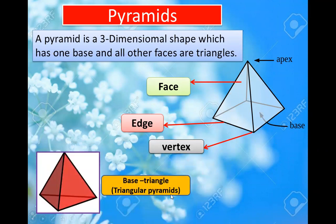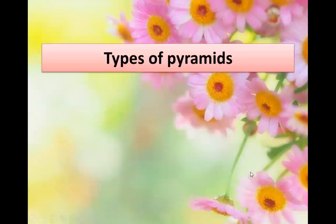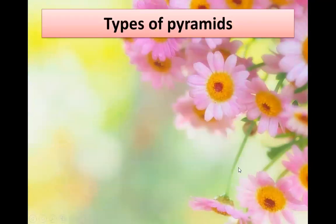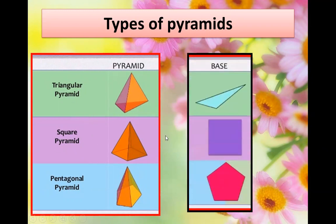A triangular pyramid — its base is a triangle. In a square-based pyramid, its base is square. Types of pyramids: there are basically three types of pyramids — triangular pyramid, square pyramid and pentagonal pyramid. Triangular pyramid, its base is triangle; square pyramid, its base is square; and in pentagonal pyramid, its base is pentagon.